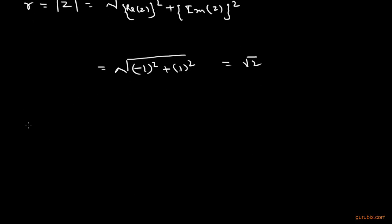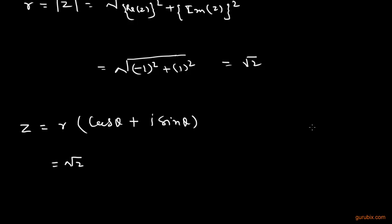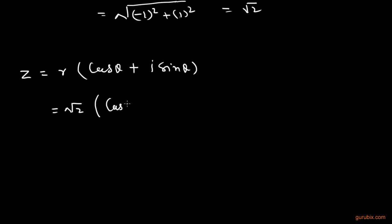Now we can write the given complex number into polar form using the formula z equals r times the quantity cos θ plus iota sin θ. Here r is square root of 2 and θ is 3π by 4. So the polar form is z equals square root of 2 times the quantity cos(3π/4) plus iota sin(3π/4). This is the polar form of the given complex number. Thank you.